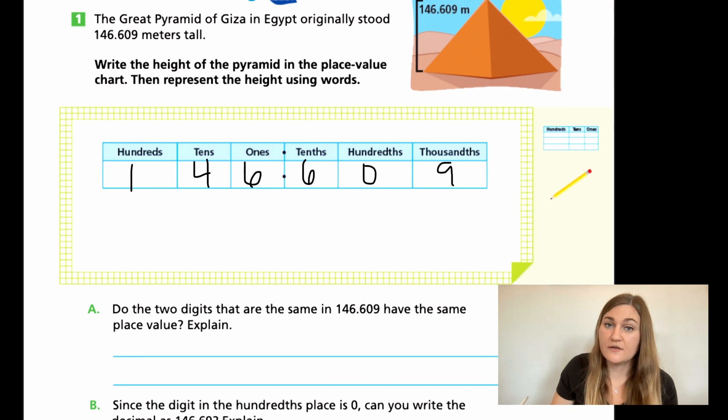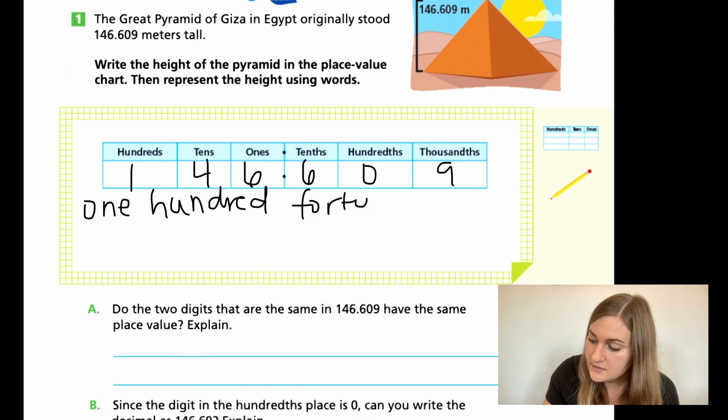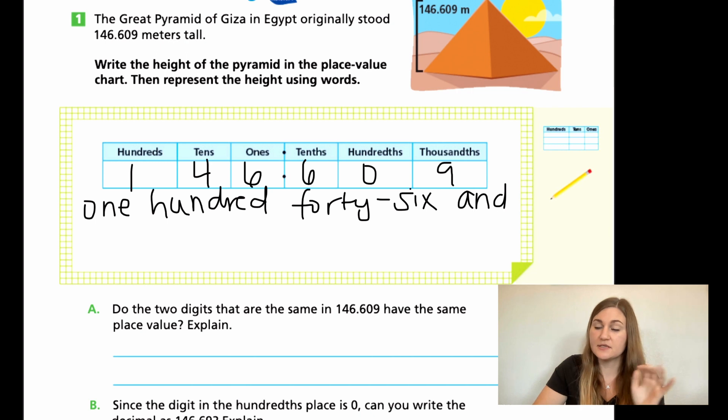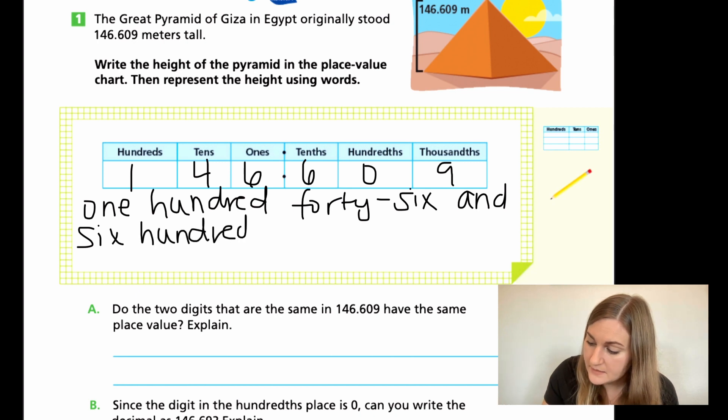Now we want to write it in word form. So we want to write 146, no ands until we get to the decimal. So 146. Now that we hit the decimal, we say and. And then the three digits together is 609. Because there's a zero, just go from the 600 to the 9. And then we want to make sure we get that place value that it ends on. And you can see here that it ends in the thousandths place.